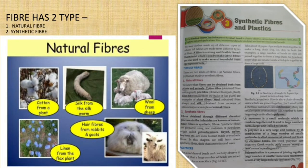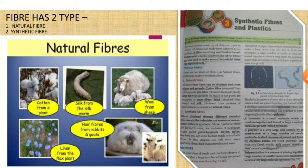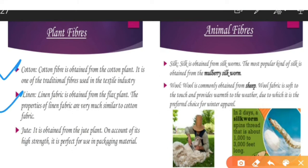Here you can see: the silkworm provides silk, the sheep provides wool, the cotton plant provides cotton, and the goat also provides natural fiber. The linen fiber is obtained from the flax plant. So now looking at plant fibers: cotton, linen, and jute. The linen is made from the flax plant — please learn this one.